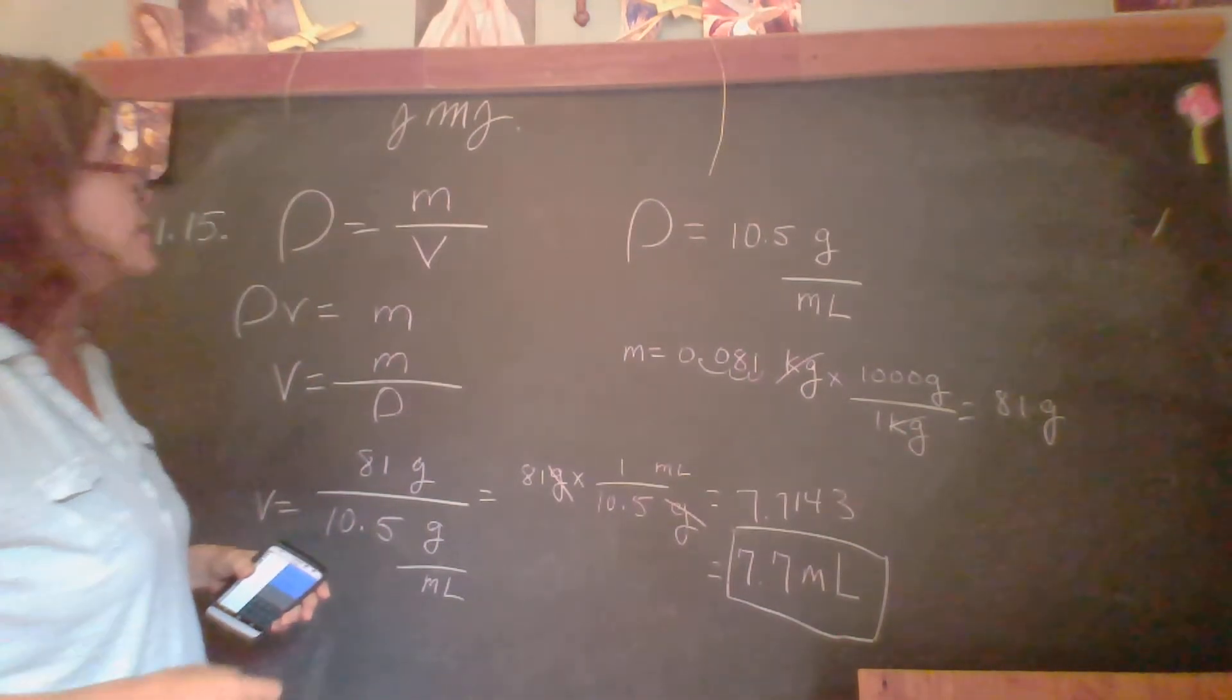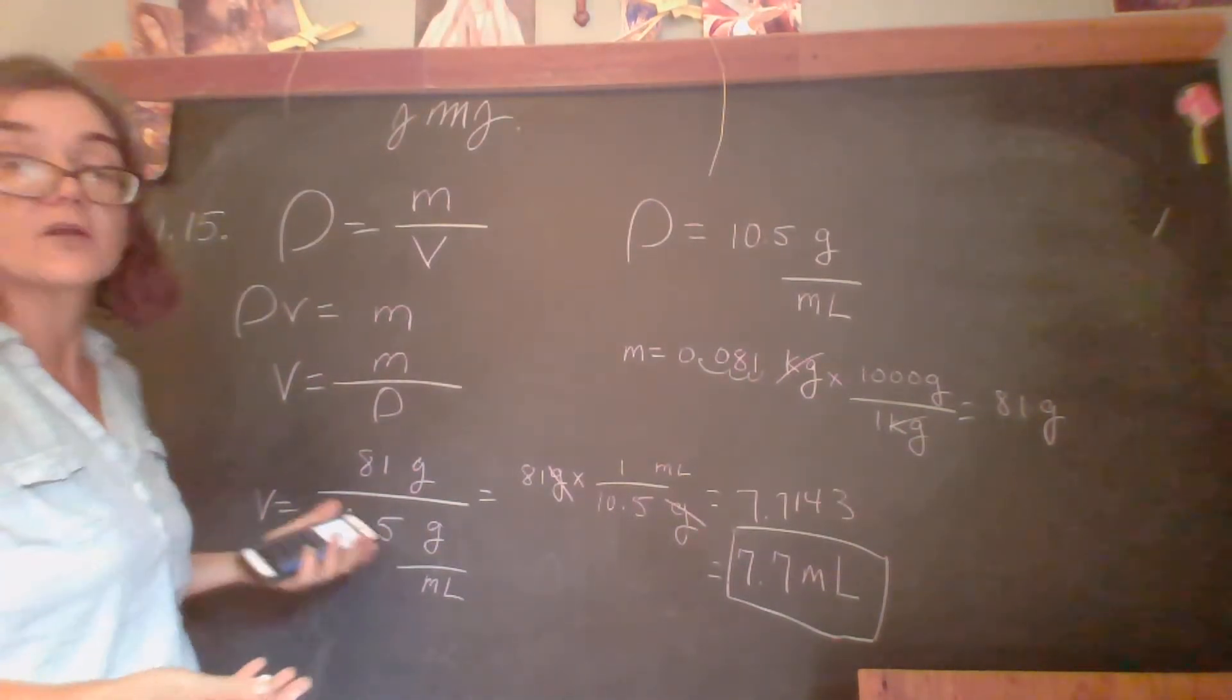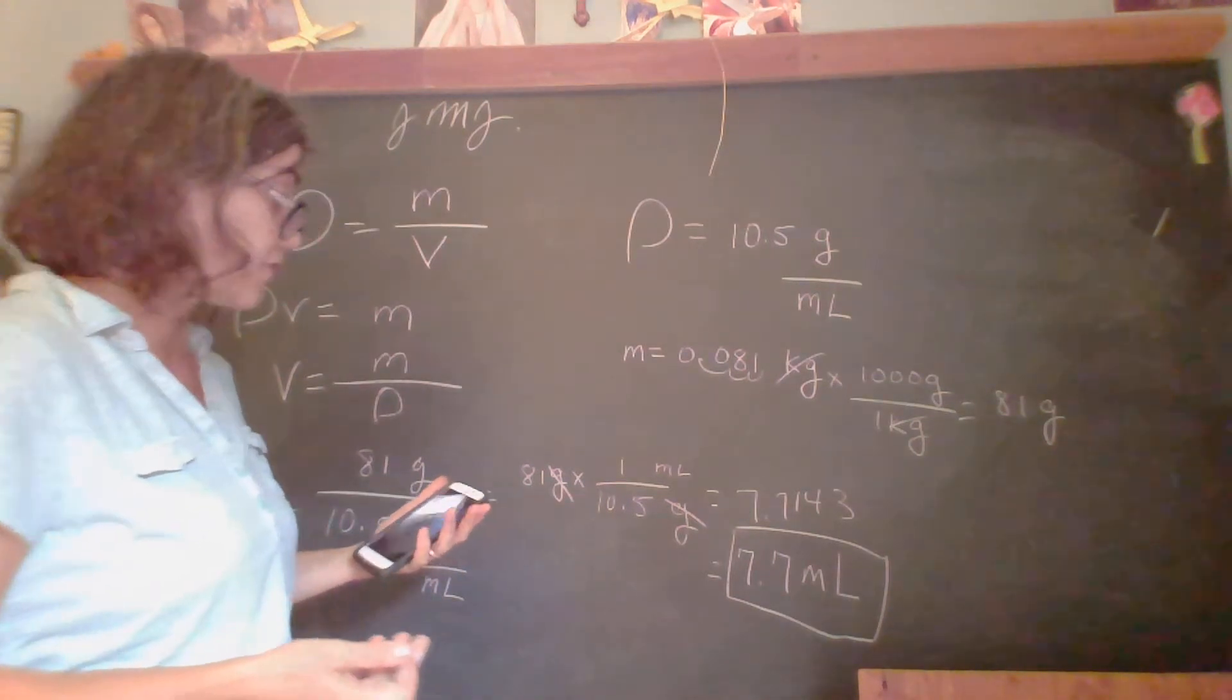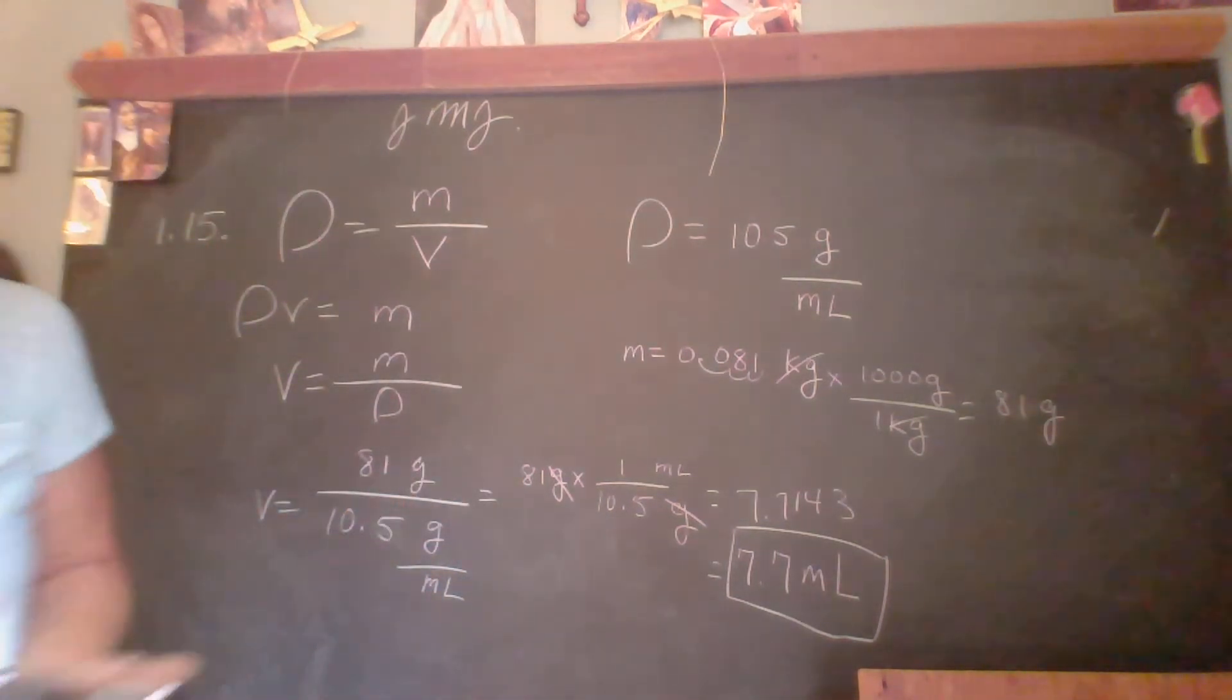If you can see that. Yes. So the volume of the gold is 7.7 milliliters.